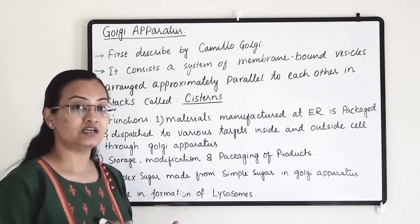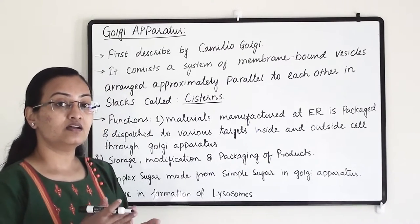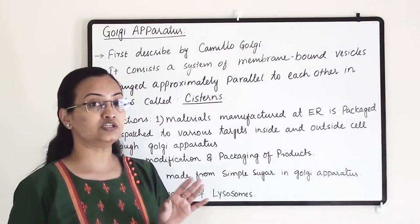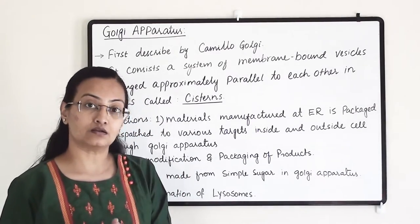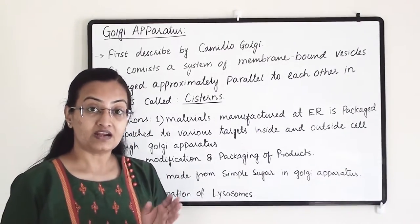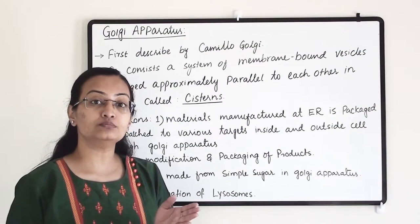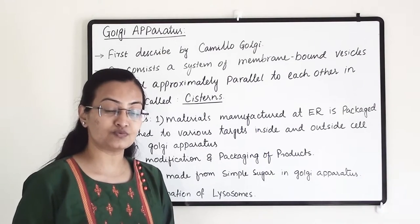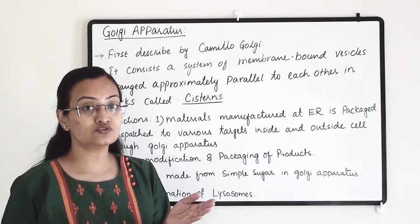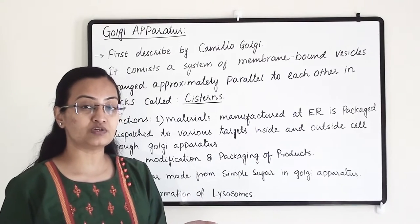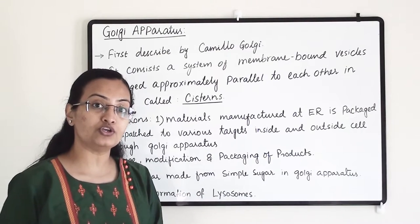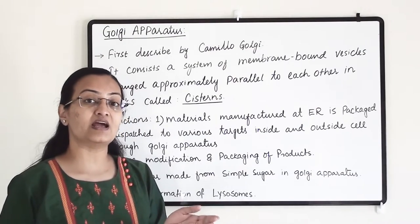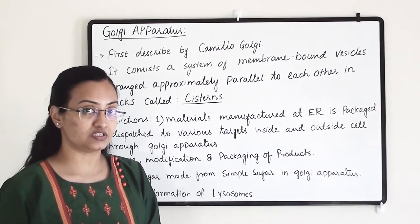The ER is of two types: smooth endoplasmic reticulum and rough endoplasmic reticulum. At the rough endoplasmic reticulum, protein molecules are manufactured at ribosome sites, whereas in the smooth endoplasmic reticulum, lipid or fat molecules are manufactured, which help in membrane biogenesis.